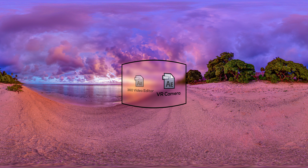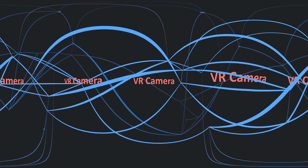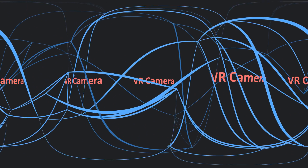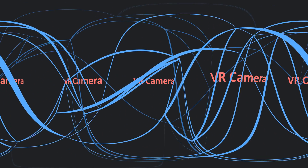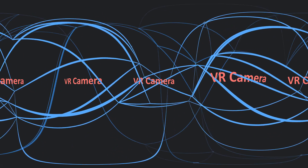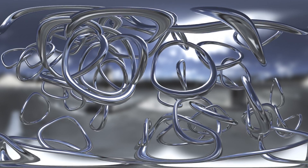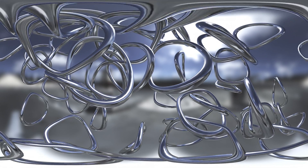The second project is VR Camera. It is the After Effects project with which you can create 360-degree format motion graphics, logo stings, and 3D animations — including support for plugins like Trapcode Particular and Form, Element 3D, Plexus, Freeform, and more — and export into 360-degree format.